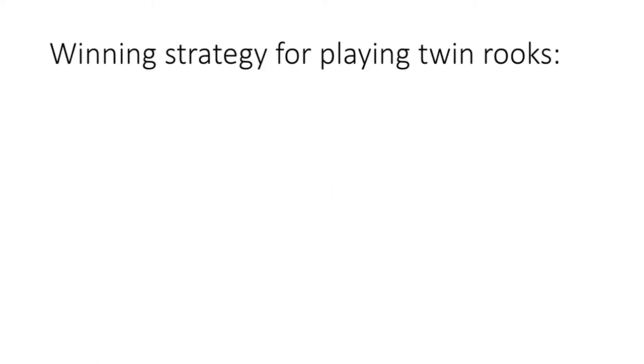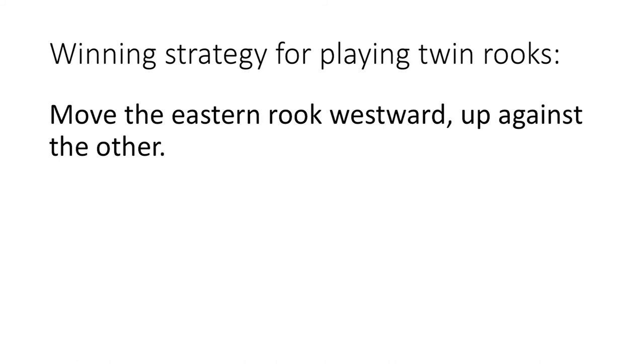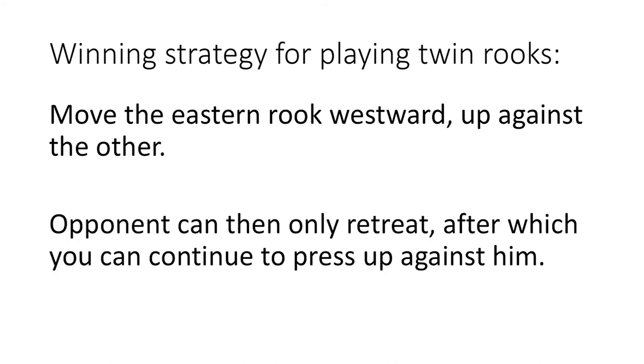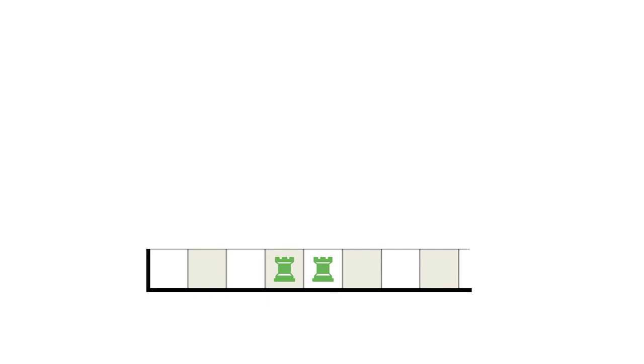What is the winning strategy for playing the single game of twin baby rooks? Answer, move the eastern rook westward up against the other. The opponent can then only play the western rook away from the eastern rook, after which you can then press the eastern rook up against him again, as we see in this sample game.